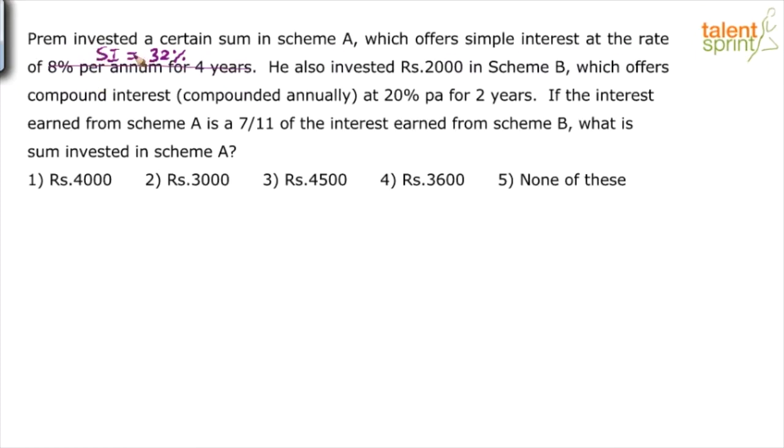And we have discussed all these techniques in the video of simple and compound interest. Simple interest of 8% per annum per year 8%, so in four years you get 32%. How much has he invested is not given to us.